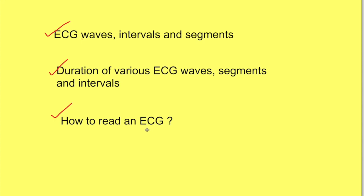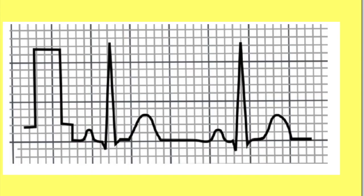ECG, that is electrocardiography, is the recording of the spread of electrical impulse in the heart and how this electrical impulse is recorded as various waves, intervals, and segments in ECG. To understand these, let us see a lead II ECG. This picture is showing a lead II ECG.